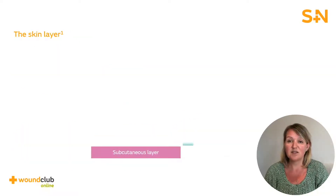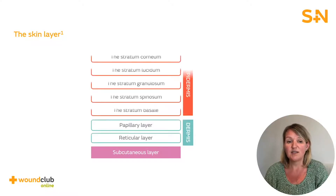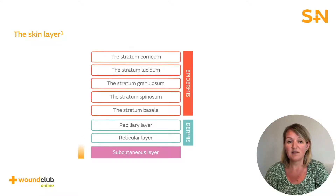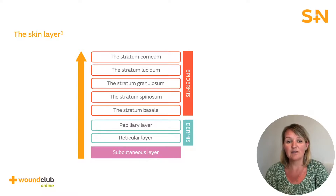The epidermis and dermis are made up of sub-layers. You can see in the epidermis that there are five cell layers. The stratum basale is the nearest layer to the dermis, located under the epidermis, and it's the only layer that consists of cells capable of division.